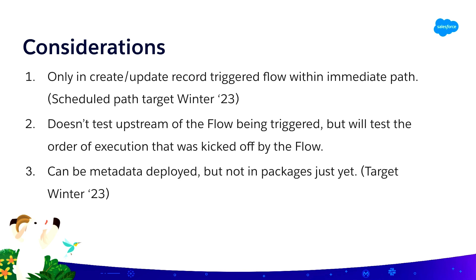There are gaps we have currently. Right now it is in beta for summer 2022, and we're targeting GA in winter. Currently we can only do create/update record triggers with an immediate path, but we want to add scheduled path support as well. It also doesn't test anything upstream of the trigger, but it does test everything after the trigger. Lastly, this is SFDX metadata-enabled, so you can move your tests from scratch org to sandbox to production. For those of you who are ISVs, we don't have packaging support just yet, so you'll need to wait for that.